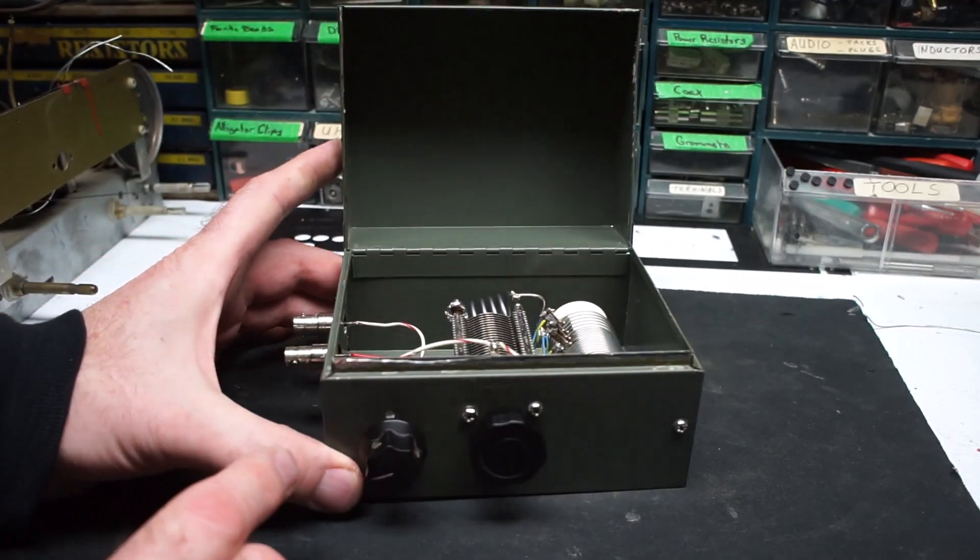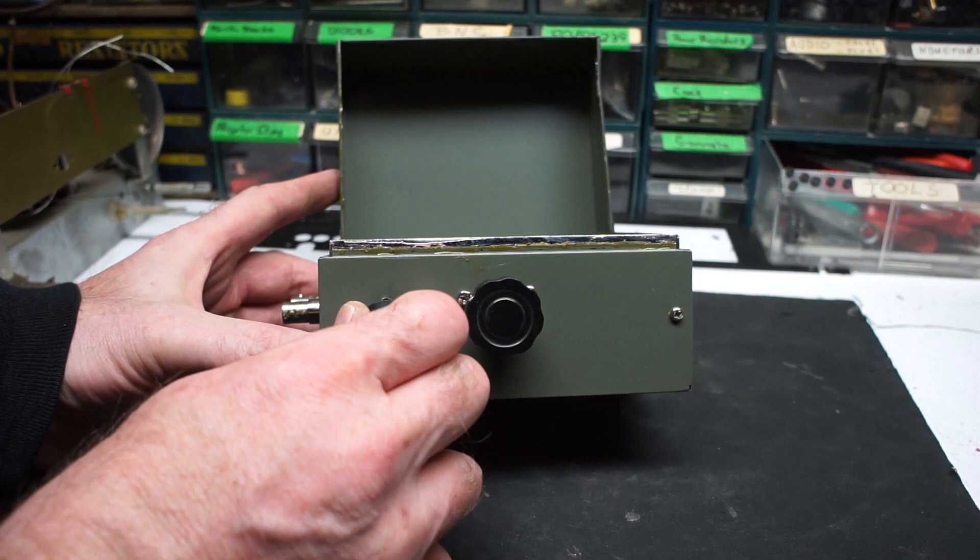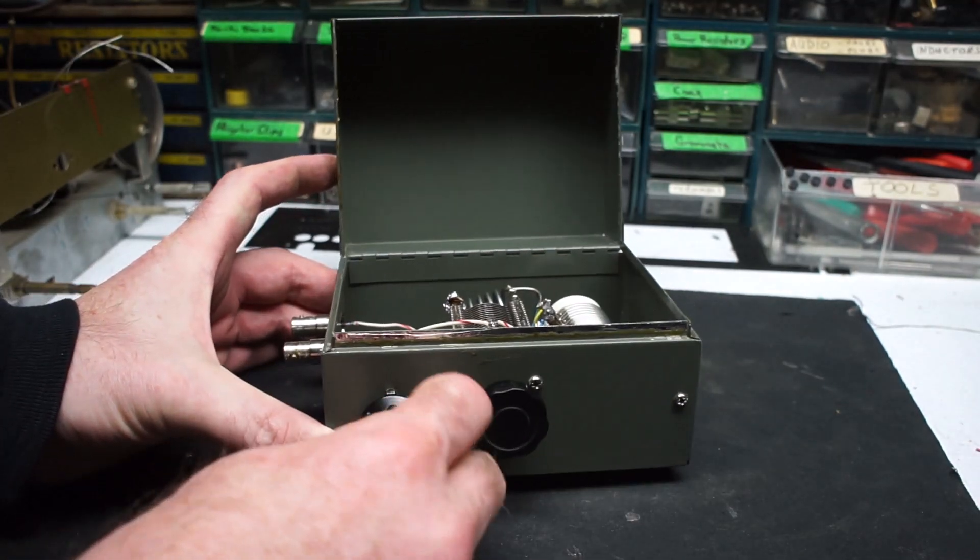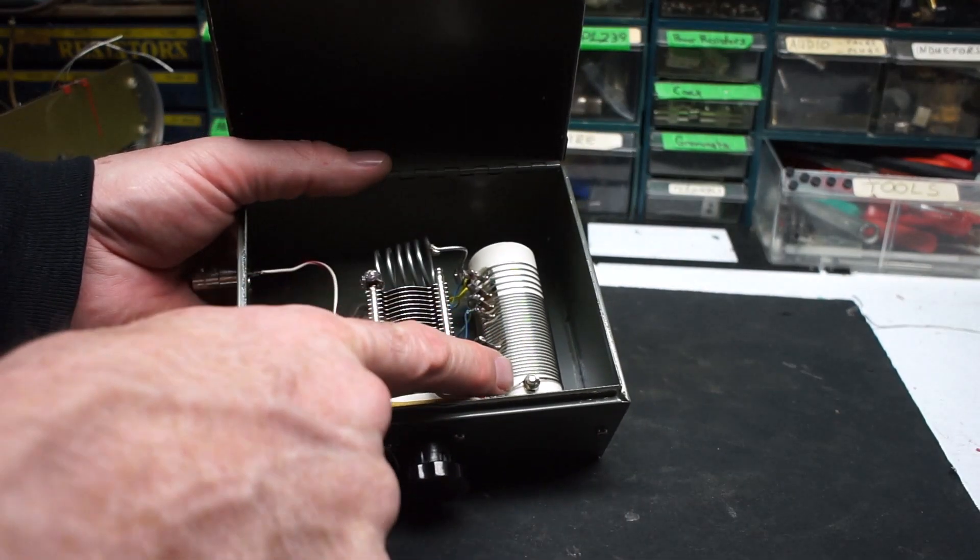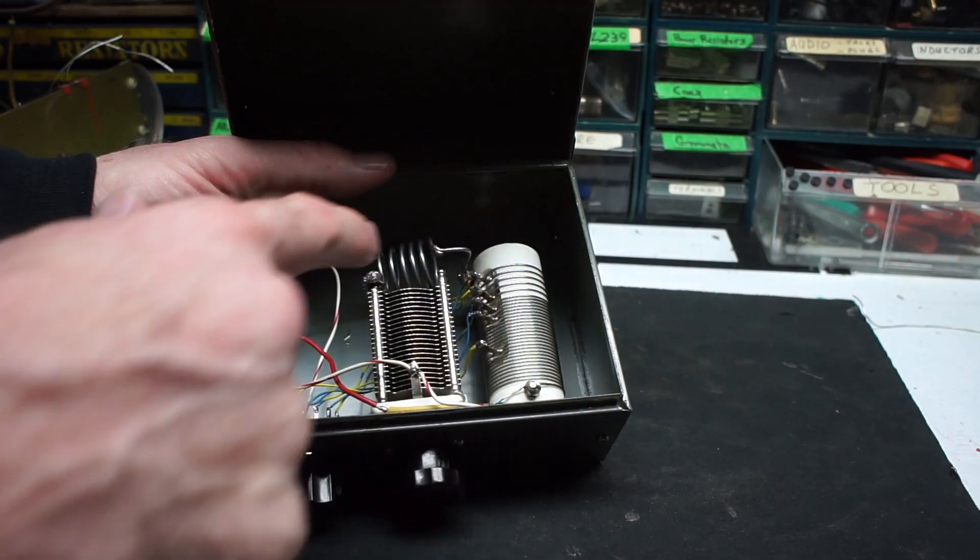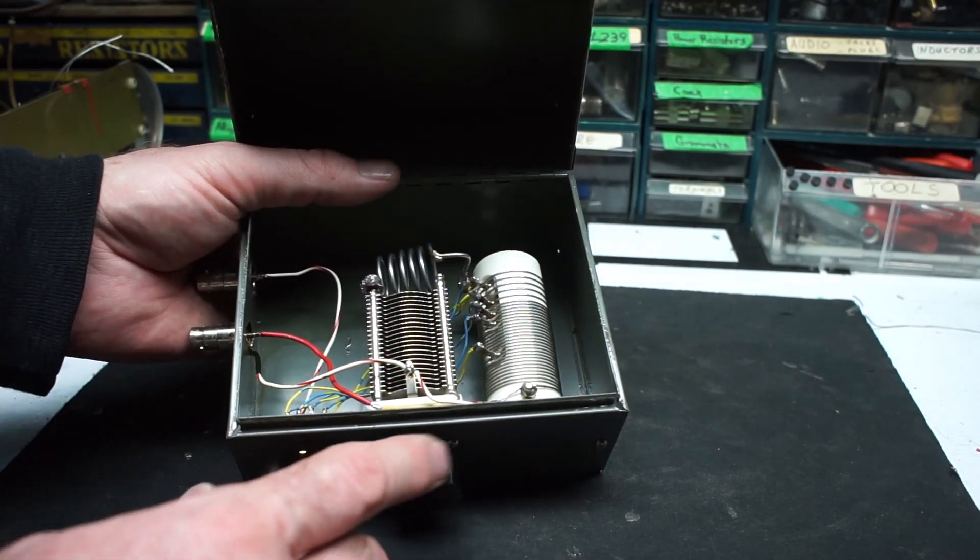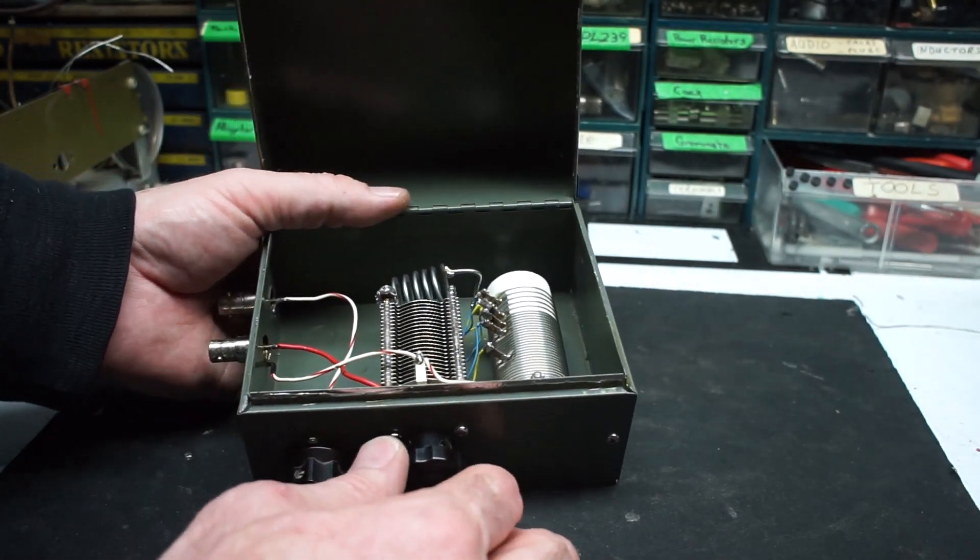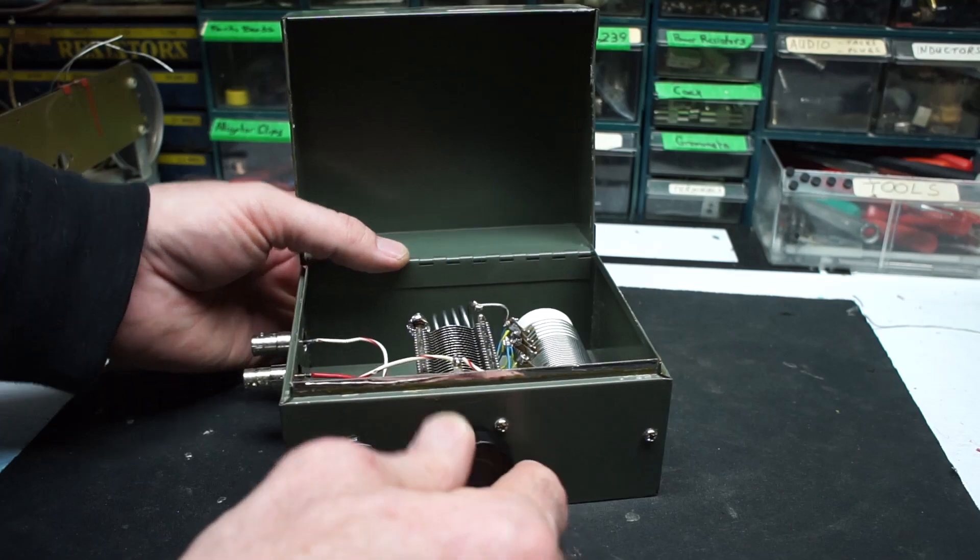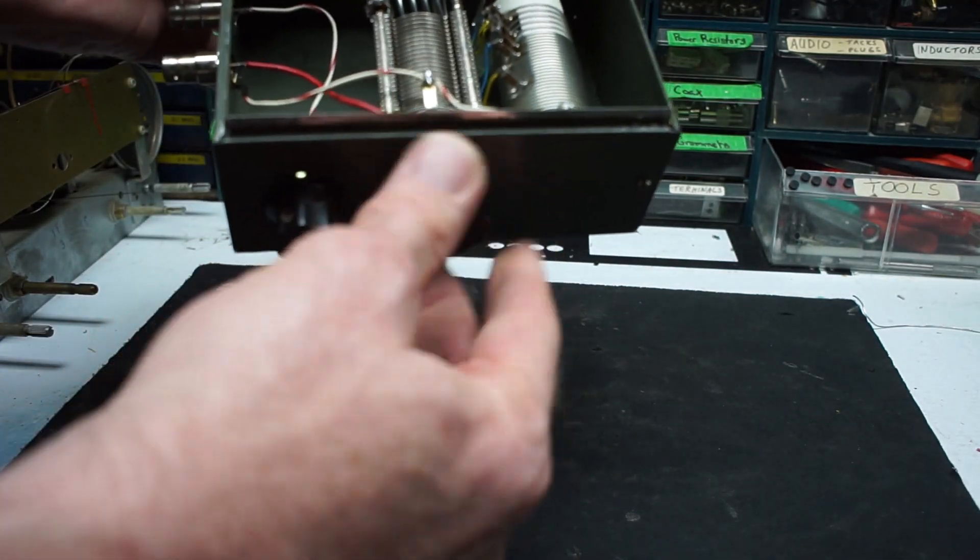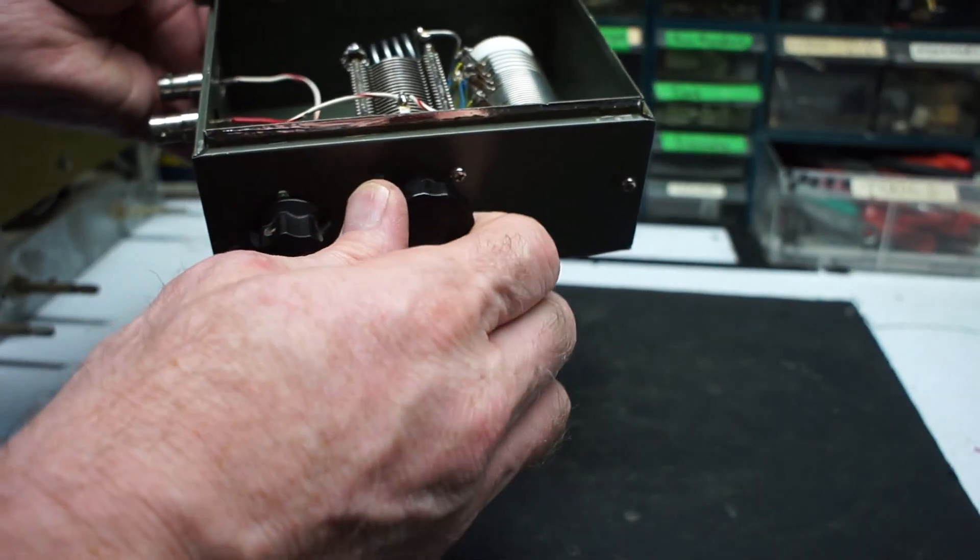Very simple, just two controls on the front. This is your band selector switch. We have seven positions, seven taps on the coil: one, two, three, four, five, six, seven, roughly 160 to 10 meters give or take. And then tuning capacitor for fine-tuning. This is the kind that just spins around, so you don't run into an end stop, it just keeps repeating and revolving.